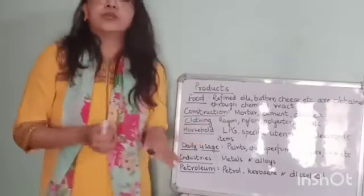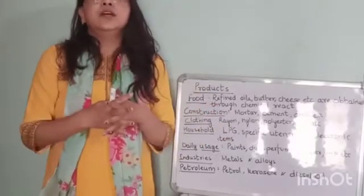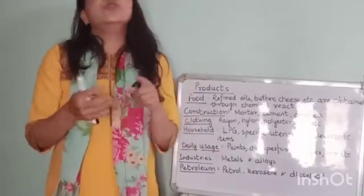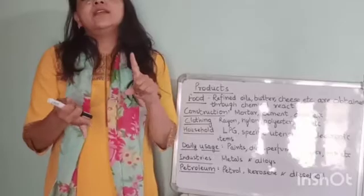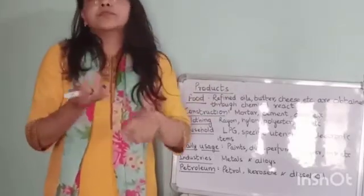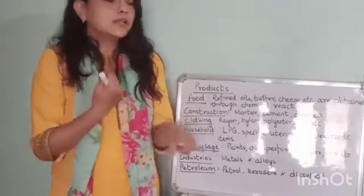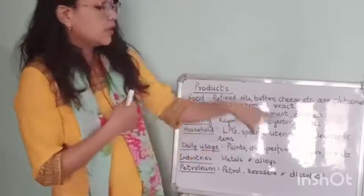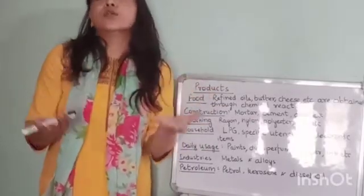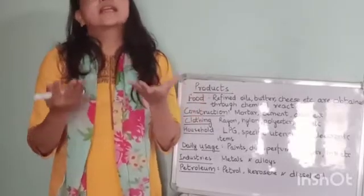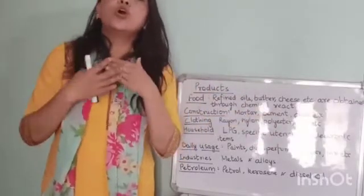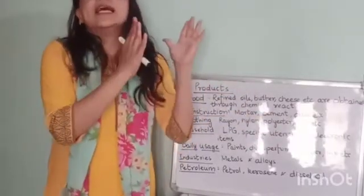In daily household use, we use LPG cooking gas, which also involves chemistry. Food preservatives are added in pickles, jams, and other food products. Utensils like non-stick cookware are also a product of chemistry, and all electronic items go through chemical processes in industry.